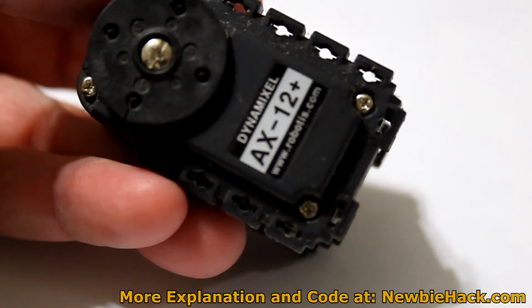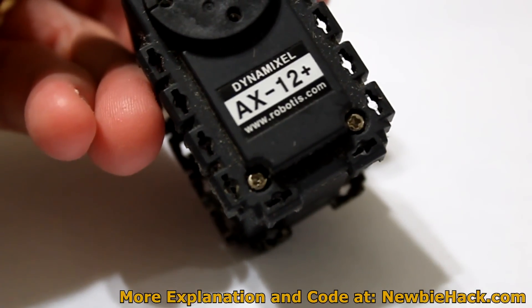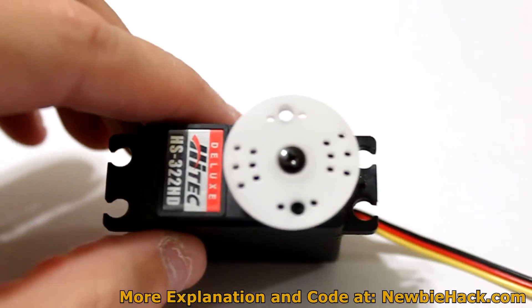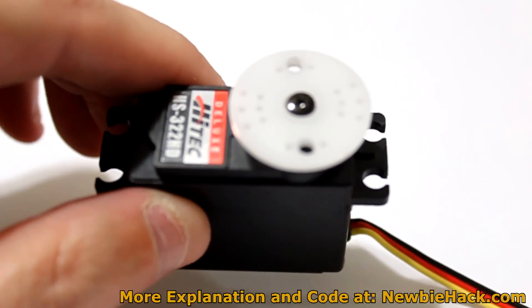There are also digital servos like the one seen here. This one is from Dynamixel, this is the AX12, and servos also come in much larger sizes for industrial use. Hobby servos are the most popular type and we're going to take a look inside and see how this one works.